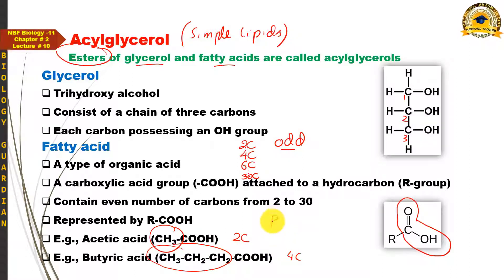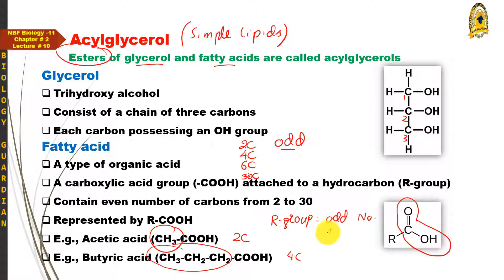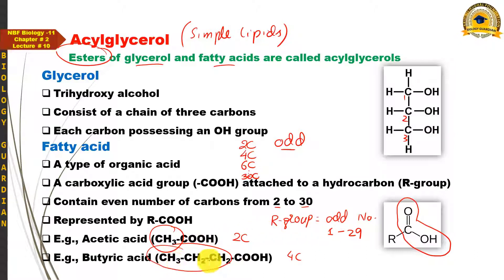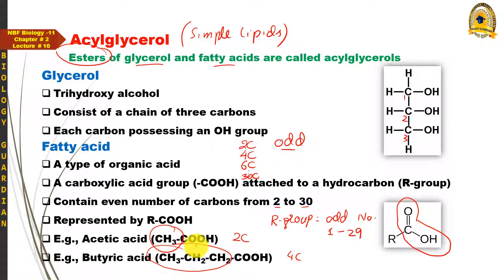یاد رکھو کہ R group کے اندر ہمیشہ odd number of carbon atoms موجود ہوں گے۔ R group میں carbon atoms کی range one سے 29 تک ہوگی، کیونکہ total number of carbon atoms کی range two سے 30 تک ہے اور R group میں ہمیشہ total carbon سے ایک carbon کم ہوتا ہے۔ Acetic acid کے R group میں single carbon، butyric acid میں three carbons، اور اسی طرح آگے five، seven وغیرہ odd numbers میں۔ Carboxylic acid group کے carbon کو بھی total میں شامل کرنا ہے۔